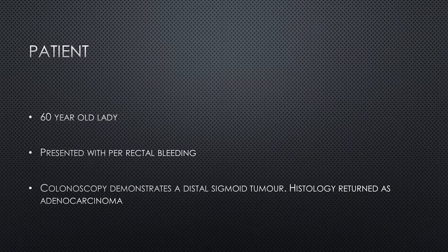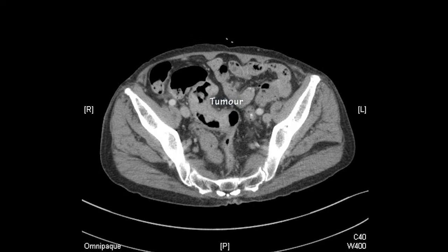The patient in question is a 60-year-old lady who presented with per-rectal bleeding. Colonoscopy demonstrates a distal sigmoid tumor with the histological diagnosis of adenocarcinoma. This is a CT scan of the patient demonstrating the sigmoid tumor in relation to the upper pelvis and the surrounding bowel.